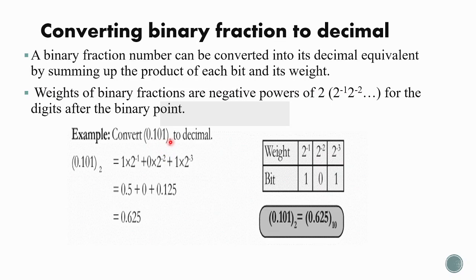Consider the example 0.101 base 2 converted to decimal. The digits are 1, 0, 1 after the binary point, and their weights start from the first bit: 2⁻¹, 2⁻², 2⁻³. Multiplying and summing: 1 × 2⁻¹ + 0 × 2⁻² + 1 × 2⁻³. Only the terms with bit 1 matter, so 1 × 2⁻¹ + 1 × 2⁻³ = 0.5 + 0.125 = 0.625.